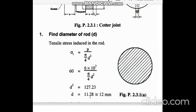d comes to 11.28, but we do not use fractions in design. You will not find an 11.28 mm diameter rod in the market — you find 10, 11, or 12 mm. So you approximate it to 12 mm as the diameter of your rod.